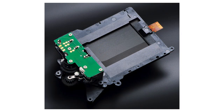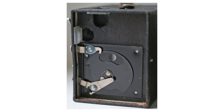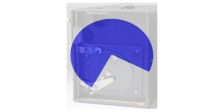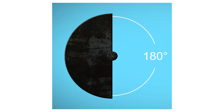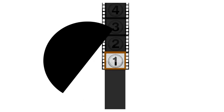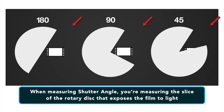Unlike a focal plane shutter in photo cameras, a motion picture camera has a rotary shutter which is a semicircular mirror spinning in front of the film gate. A 180-degree or half-circular shutter exposes the frame for half the time. As the shutter spins, it blocks the light from the lens and the film advances. When the shutter spins out of the way, a new frame is exposed and the process repeats. Shutter angle is measured in degrees — we're measuring the slice of the rotary disc that exposes the film to light, like the slice of a pie.